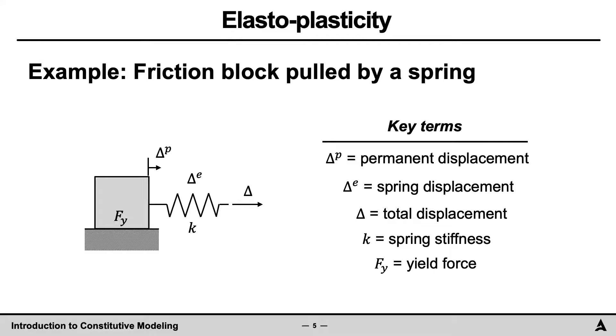To present these concepts, a simple block-spring system will be used. As seen, the response to the block is described by a few key terms. In terms of displacement, the total displacement of the block, delta, is decomposed into the elastic displacement, delta superscript e, in the spring, and the permanent displacement of the block, delta superscript p. The material response to the system is related to the spring stiffness, k, and the yield force, fy.